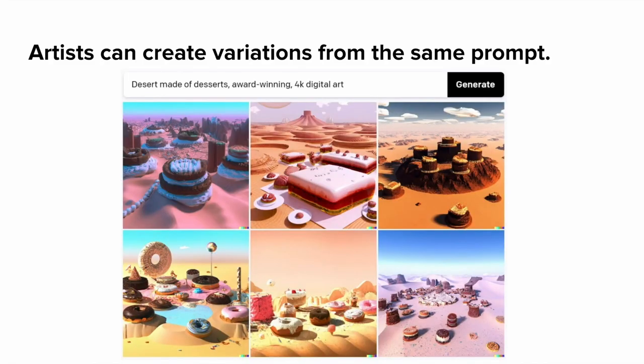Another function offered by DALL-E and other models is generating variations from the same prompt. Because these AI models operate over images and text as continuous mathematical representations, they can interpolate data points to give different variations. For example, the prompt 'dessert made of desserts, award winning, 4K digital art' yields a number of different image results, allowing you to explore many directions from the same high-level conceptual thought.